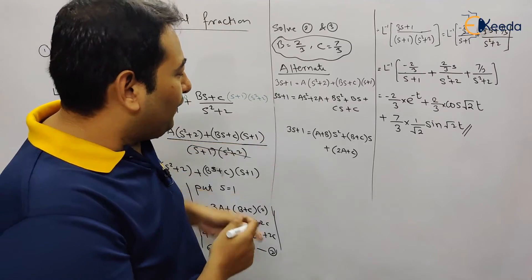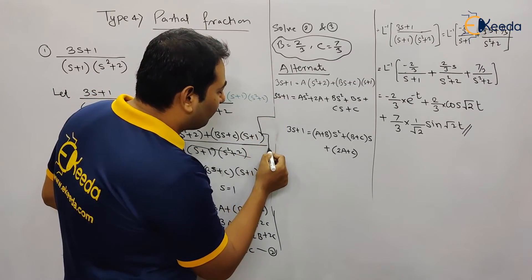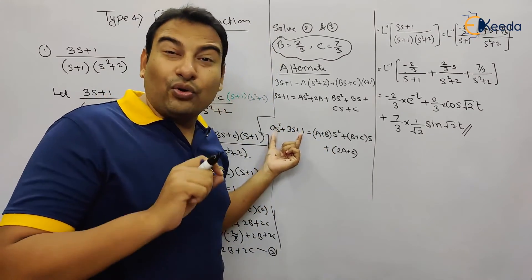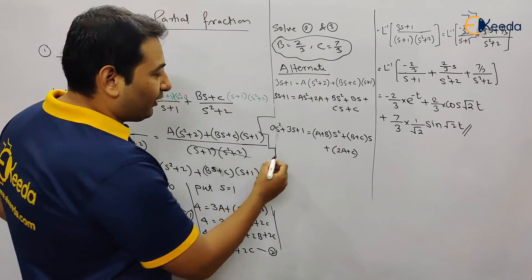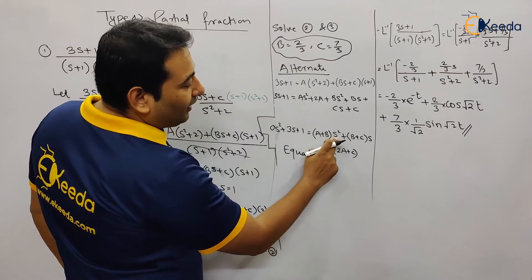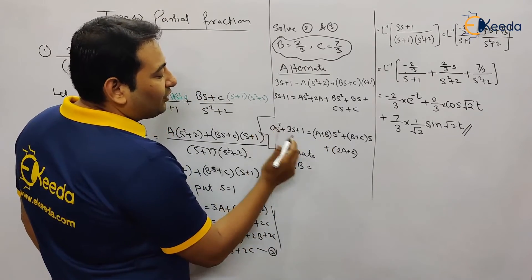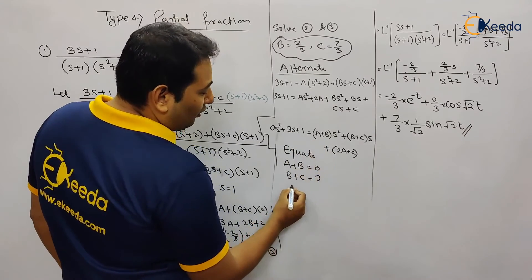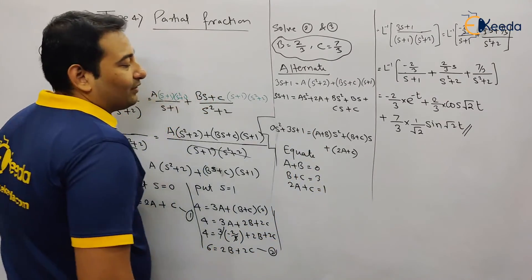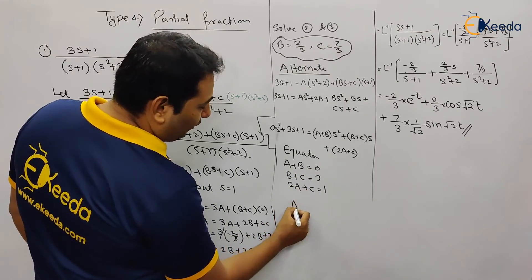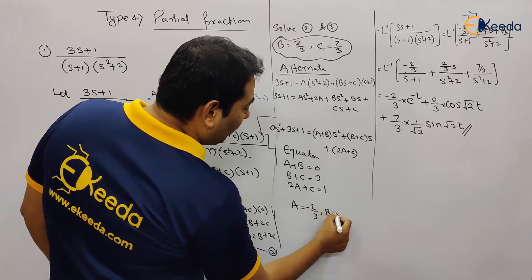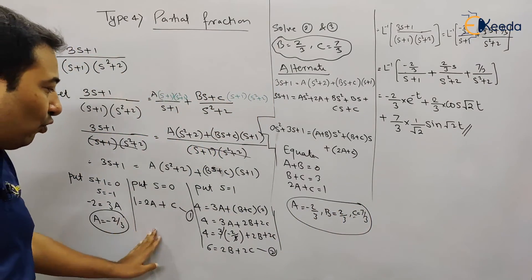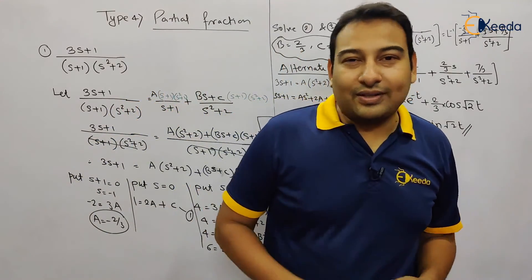On the left hand side we have 3s + 1 — we don't have an s² term, so we assume 0·s². Equating coefficients: s² gives A + B = 0; s gives B + C = 3; constant gives 2A + C = 1. Solving these three equations in a calculator gives A = −2/3, B = 2/3, and C = 7/3 — the same result as the substitution method.